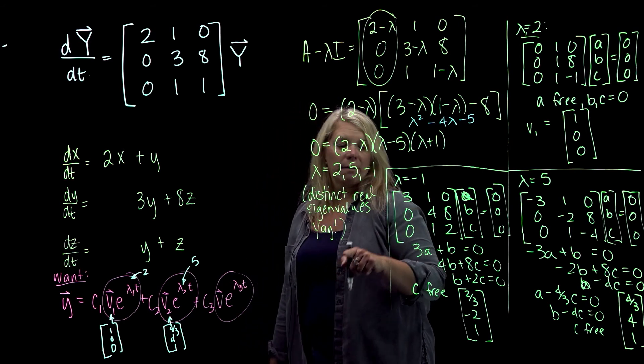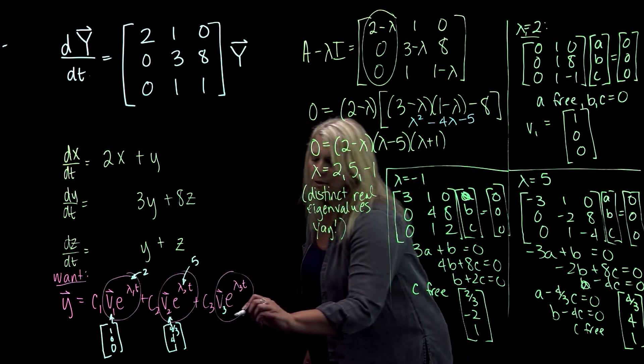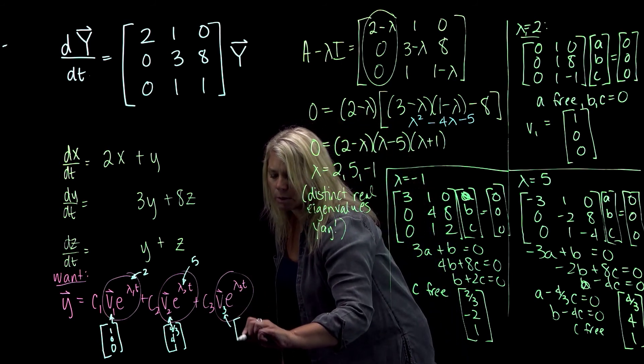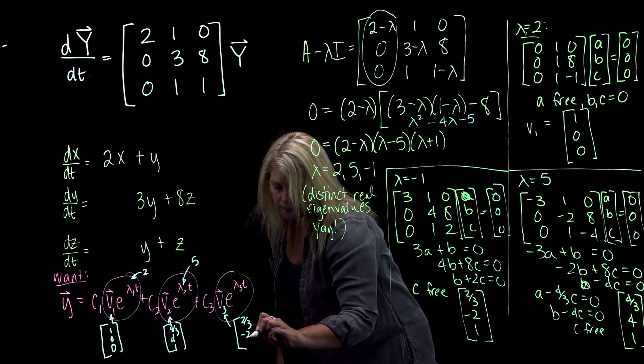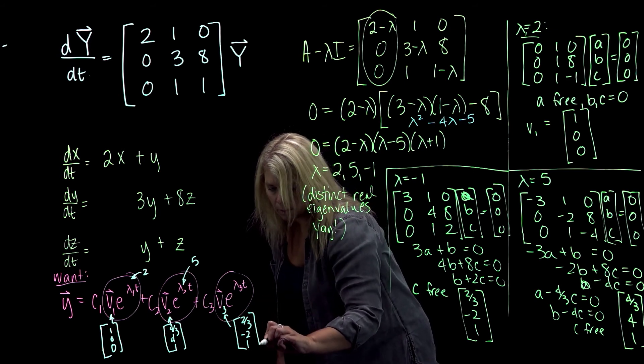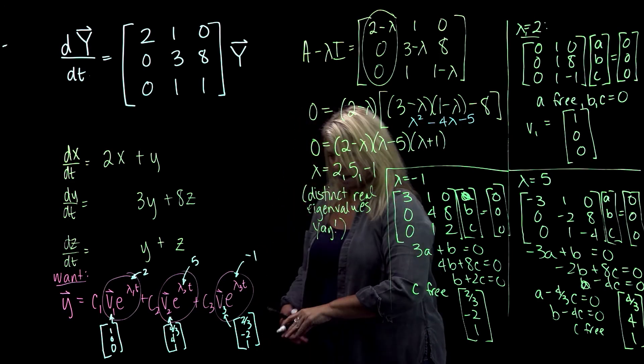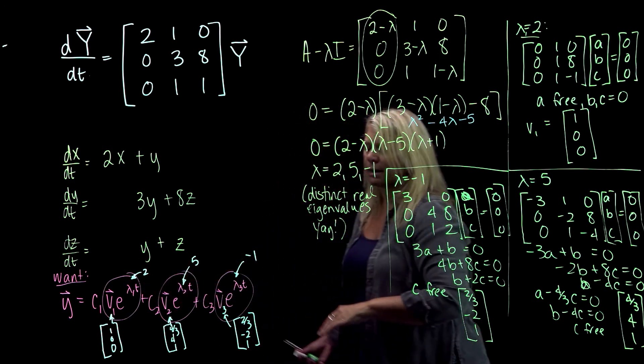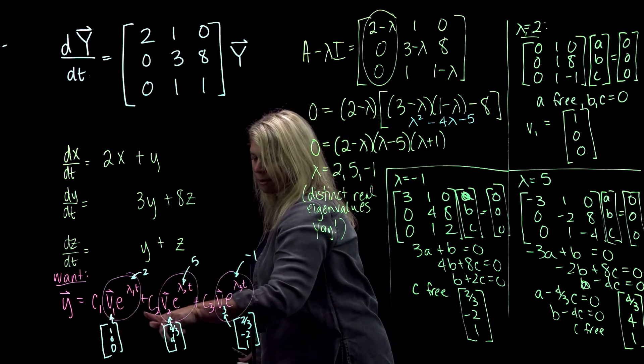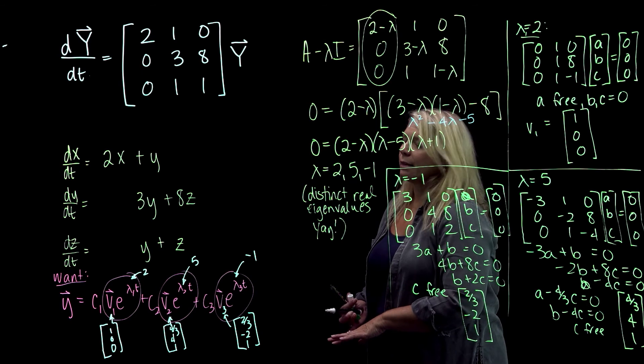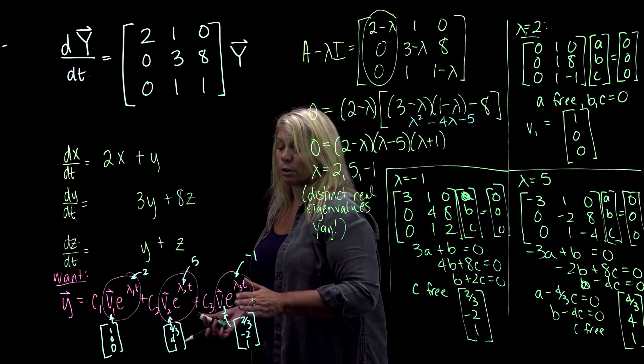And then for my v3, oops, I didn't put a v3 there. For my v3, I'm going to use this vector [2/3, -2, 1] or any non-zero scalar multiple of that vector would work too. And then my lambda 3 is negative 1. Alright, so I'm kind of out of space to write that neatly, but you should put those vectors and those lambda values in those spaces. Don't forget the c1, c2, c3 to represent that you're taking all possible linear combinations of those solutions. And then that would give you the general solution for your system of equations represented by this.